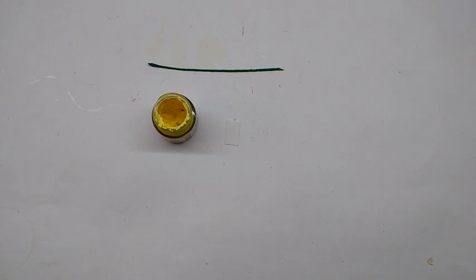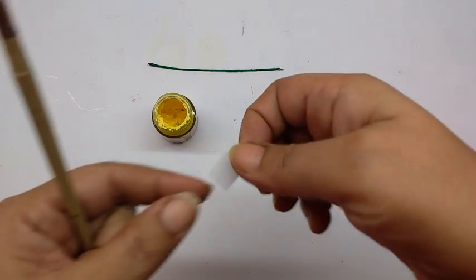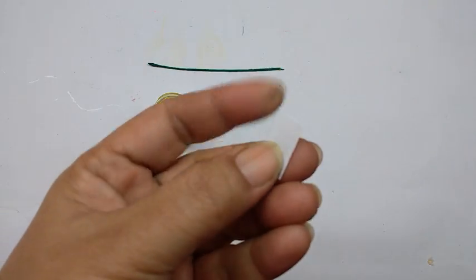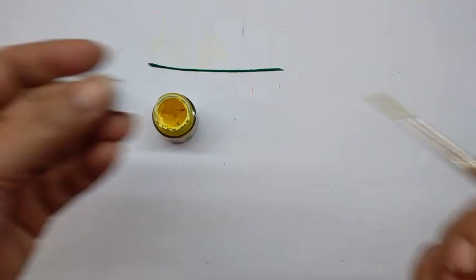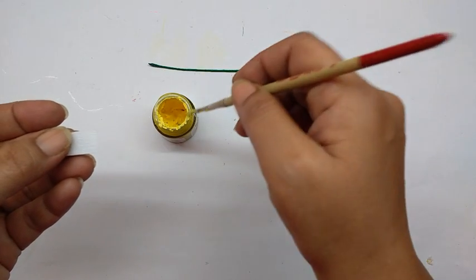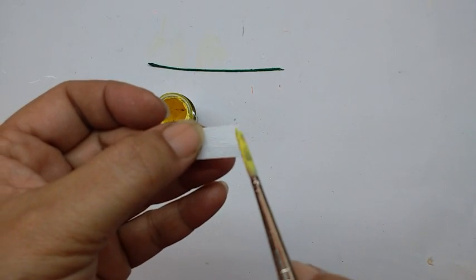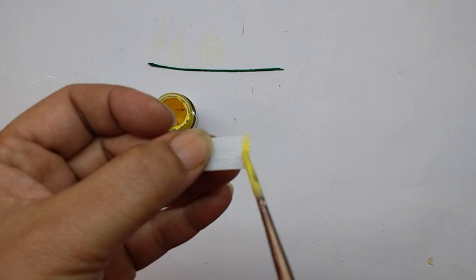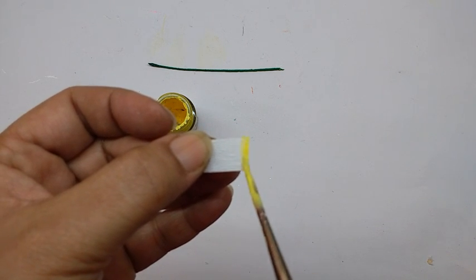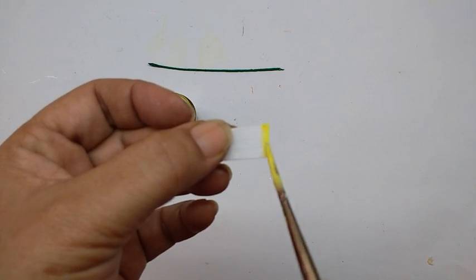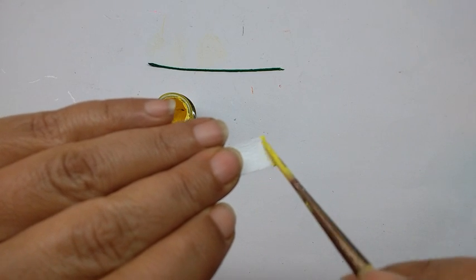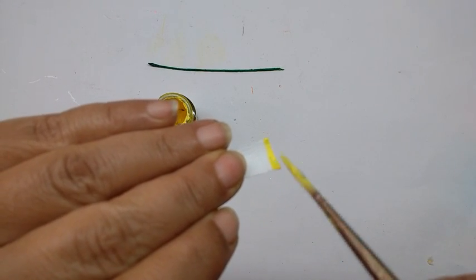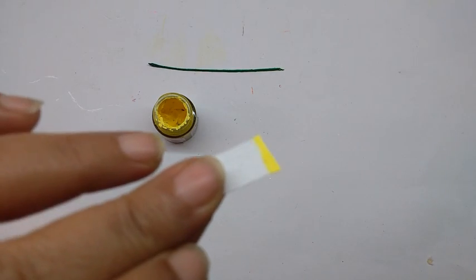Now take the small white piece and take some yellow acrylic paint and just paint the edge, about 1 millimeter wide on both sides, and leave it to dry.